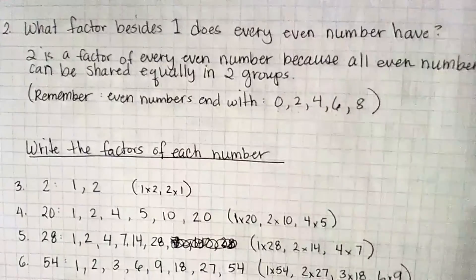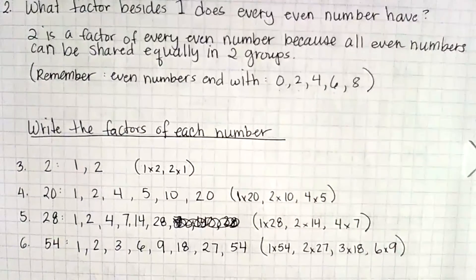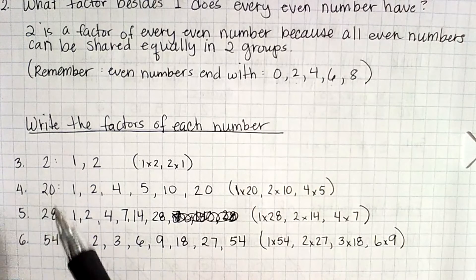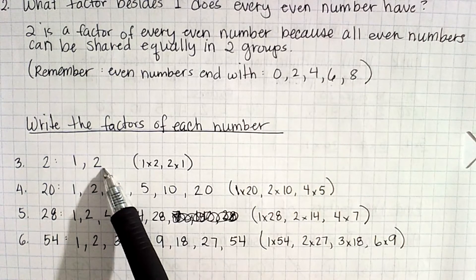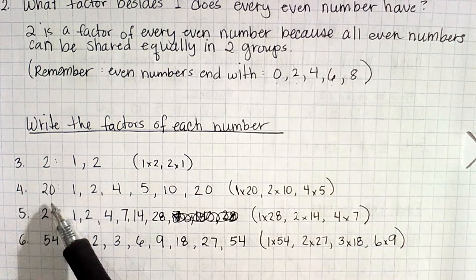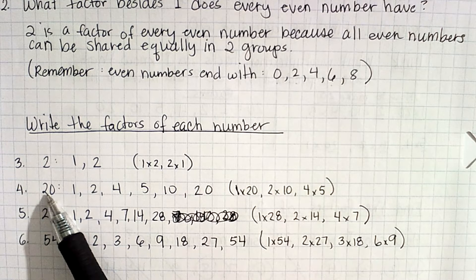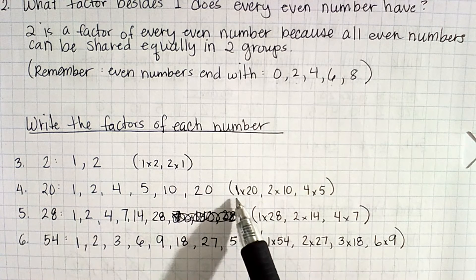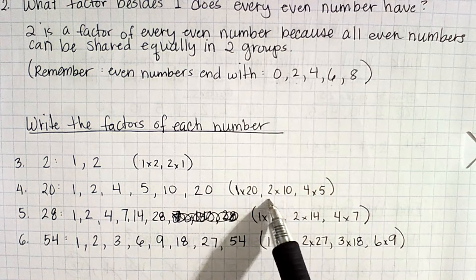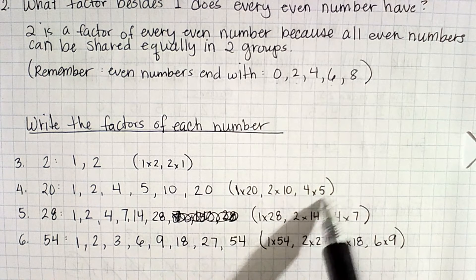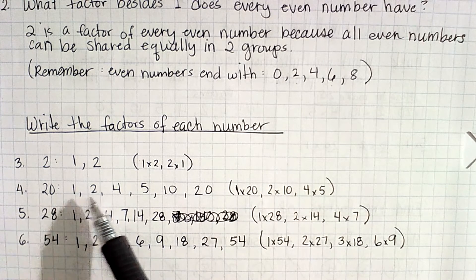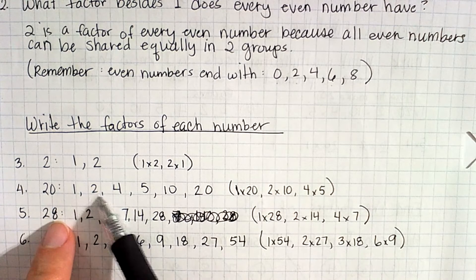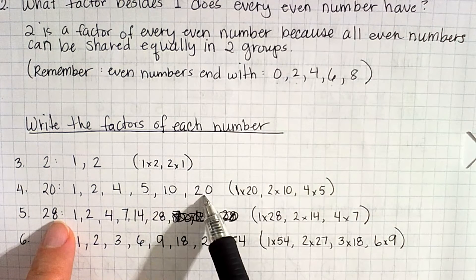For the rest of guided practice, write the factors of each number. For the number 2, I can only make 2 by doing 1 times 2 or 2 times 1, so 1 and 2 are the only factors. For the factors of 20, I can make 20 by doing 1 times 20, 2 times 10, or 4 times 5. Using the commutative property, the factors are 1, 2, 4, 5, 10, and 20.